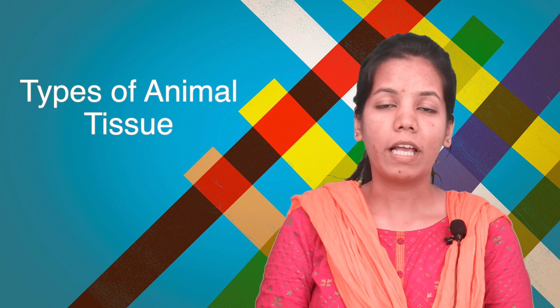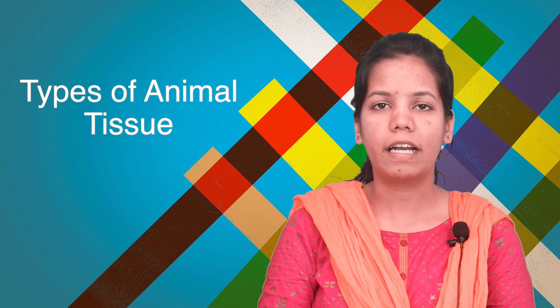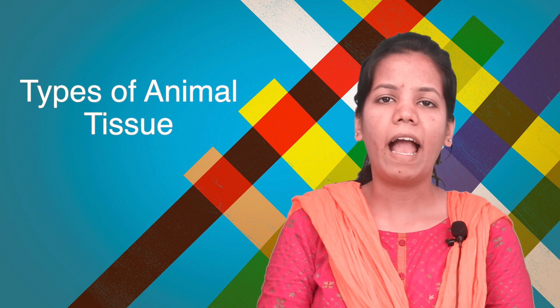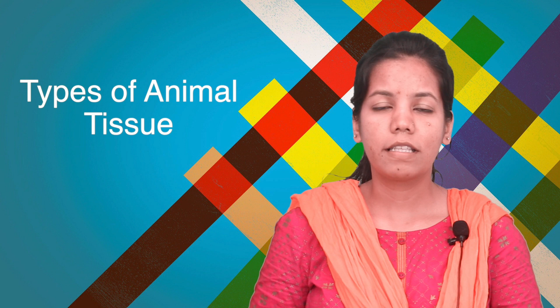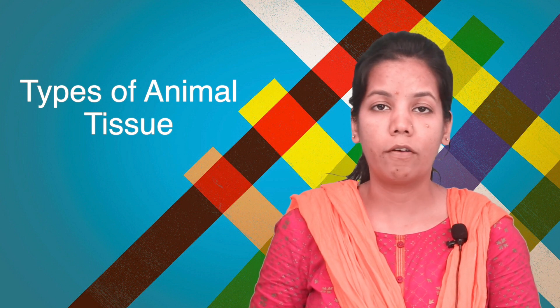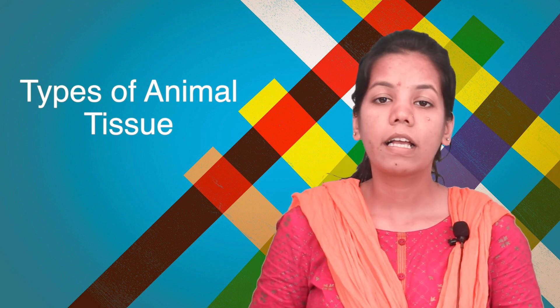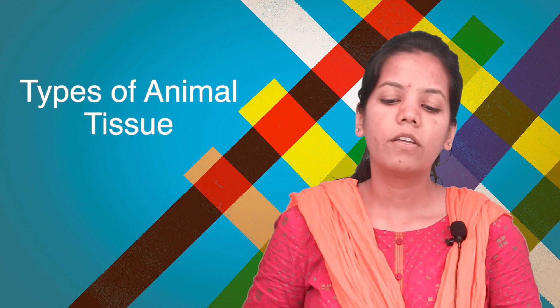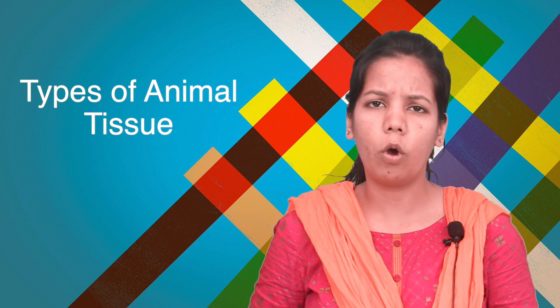Hello students, today we are studying chapter: Study of Animal Tissue. In that, we are studying the topic: Types of Animal Tissues. Now in animals there are four different kinds of tissues that are found: epithelial, nervous, connective, and muscular tissue. Today we'll be studying about all of them — their functions, structure, everything.